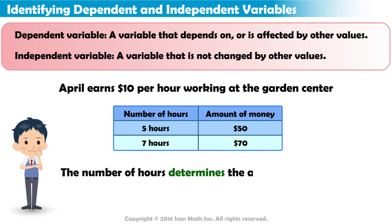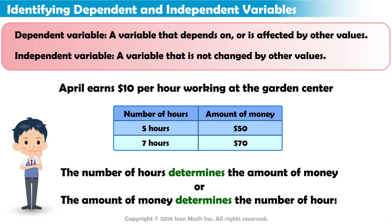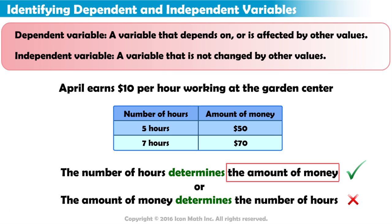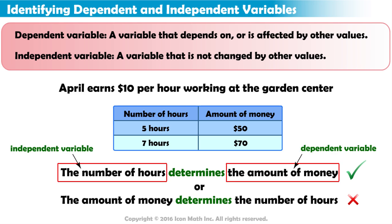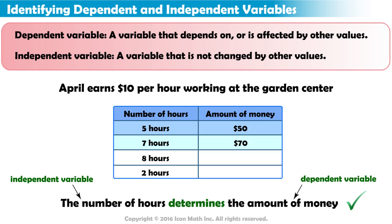Does the number of hours April works determine the amount of money April is paid? Or, does the amount of money April gets paid determine how many hours she works? The amount of money April is paid is determined or dependent on how many hours she works. So, the amount of money April earns is the dependent variable. The independent variable is the number of hours April works. She can work more or less hours, which has an effect on how much money she earns.